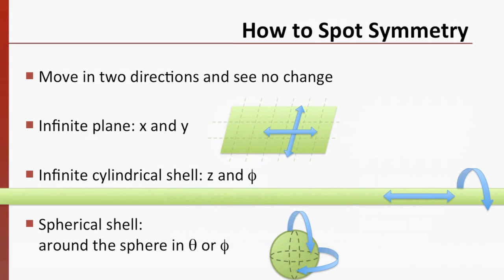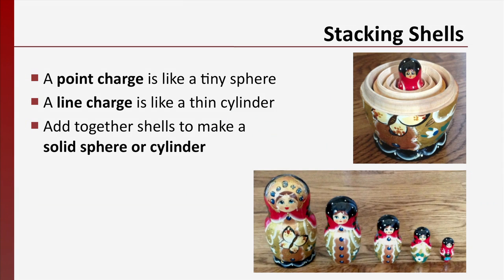All three of those have a special quality. If you move in two directions, they look exactly the same. No matter how far across the plane you move in x or y directions, it looks identical. Move along the cylinder, or around it, and it looks the same. Rotate around the sphere, around the equator, or the poles, and you can't tell the difference. We can also add similar objects together, or scale them however we like. By integrating the fields from a lot of shells, we can create a solid object, just like these Russian nesting dolls.